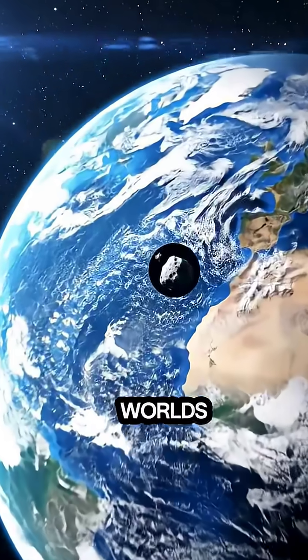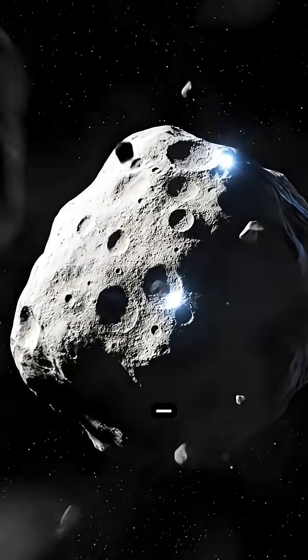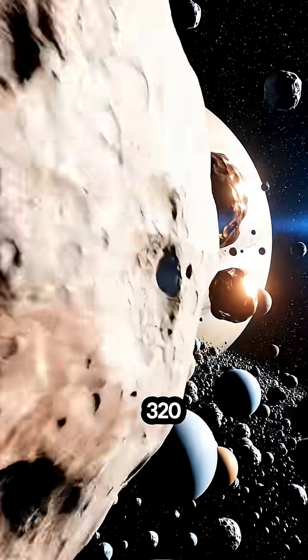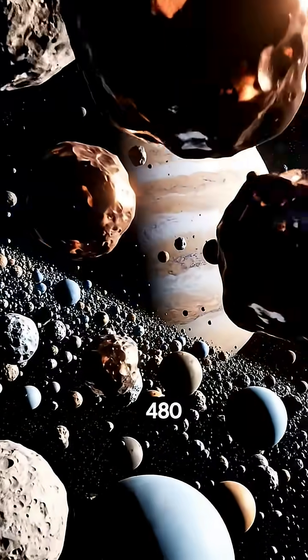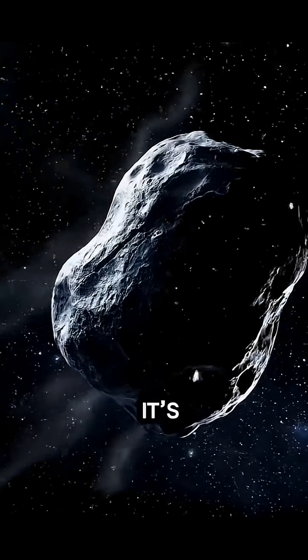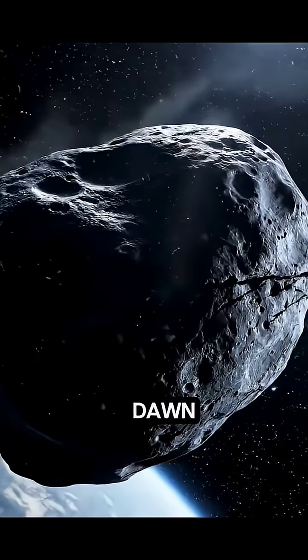Beyond the inner worlds lies a wide gap filled with ancient debris. The asteroid belt stretching between Mars and Jupiter, roughly 320 million to 480 million kilometers from Earth. It's a field of rocky remnants, leftovers from the dawn of planet formation.